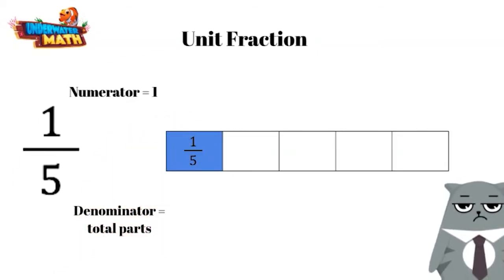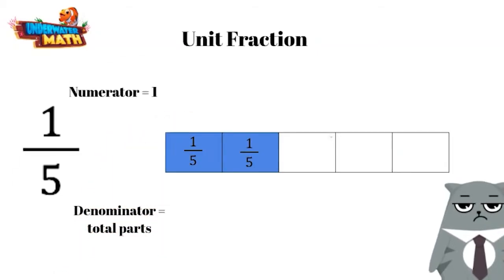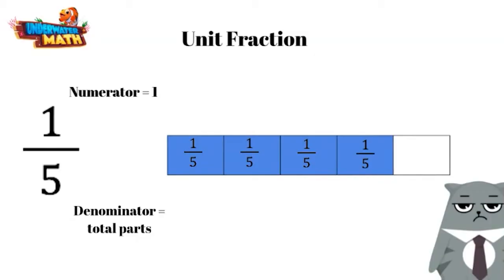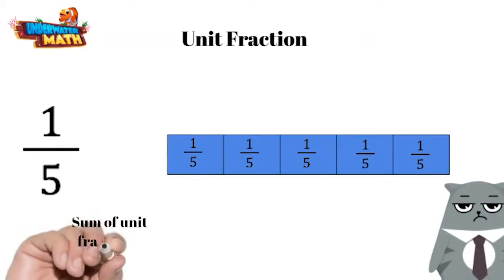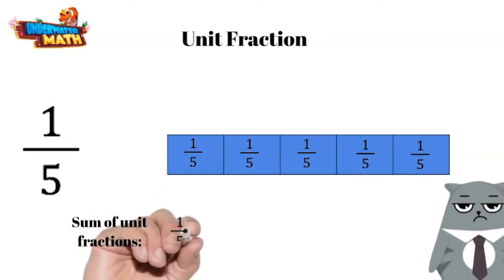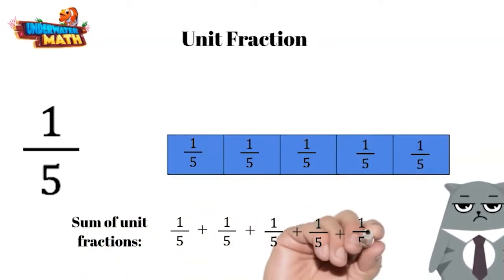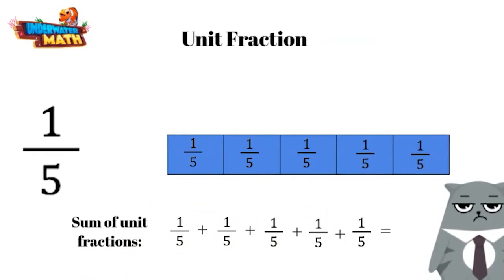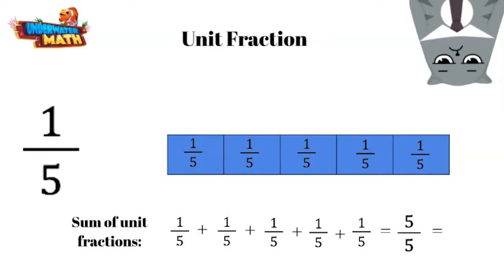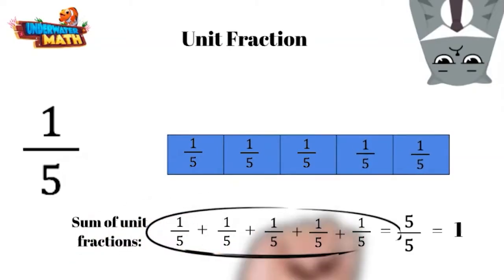In this model, the shaded piece is one unit fraction. Each of these unit fractions can be written as one-fifth. We can represent this area model with the sum of unit fractions that make up all the shaded parts — that means you add them all up. And when we add up all the unit fractions in this model, we get five-fifths, which is one whole.